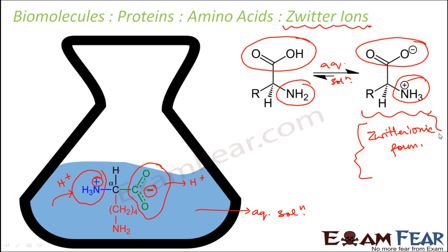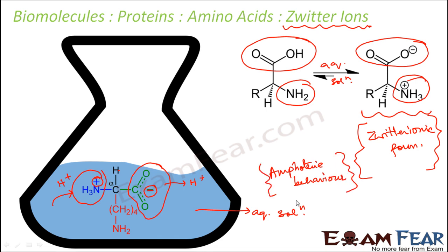The zwitterionic form is seen only when the amino acid is put in an aqueous solution. Overall, this zwitterionic form is still neutral. However, since COO becomes COO⁻ and NH₂ becomes NH₃⁺, the amino acid shows amphoteric behavior — that is, it acts like both an acid and a base. This behavior happens only in aqueous medium, and this is the concept of the zwitterionic form.